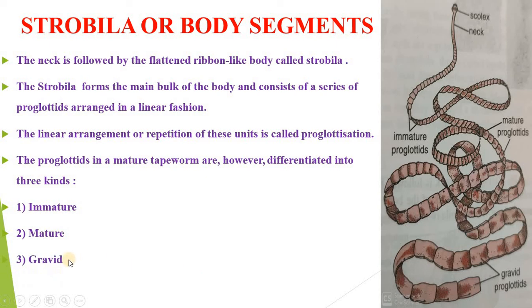Next is the gravid proglottid. These are the oldest proglottids and are towards the posterior side of the strobila, including nearly 150 to 200 proglottids. These segments are longer than their breadth. In fact, the proglottids of the strobila widen gradually along their length from anterior to posterior side. The proglottids bear a genital papilla and pore alternating once to the right and once to the left.